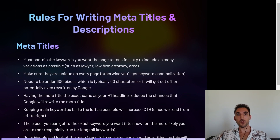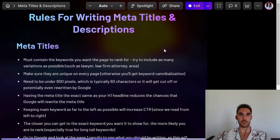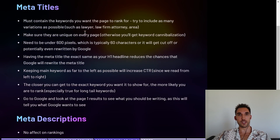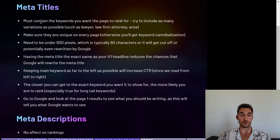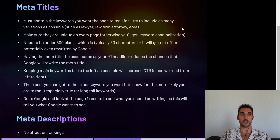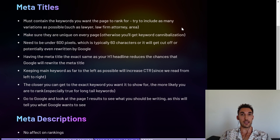Now, rules for writing meta titles. First of all, they must contain the keyword that you want the page to rank for. You want to try and include as many variations of the keyword as possible. For instance, if we're talking about a law firm, you'd want to include keywords like lawyer, law firm, attorney, and the area that you're trying to rank for in the meta title as well.